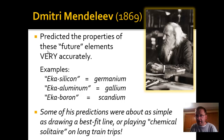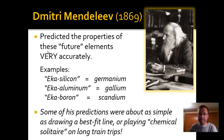For example, he predicted there would be an element like silicon, which he called eka-silicon — today we call that germanium, right below silicon on the periodic table. He also predicted eka-aluminum, which we now know as gallium, and eka-boron, which corresponds to scandium. These elements are in the neighborhood on the periodic table and share common electron properties we can explore further.